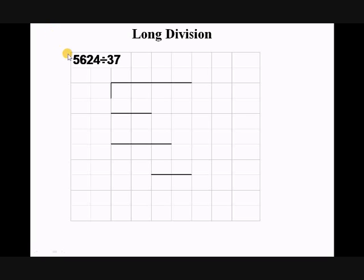Consider these two numbers: 5624 divided by 37. I put them in the bus stop grid. 5624 goes inside the bus stop, 37 goes outside.